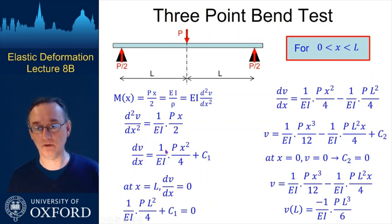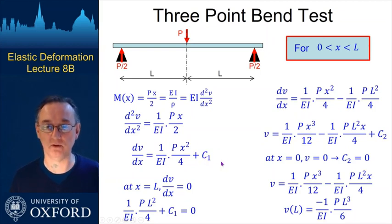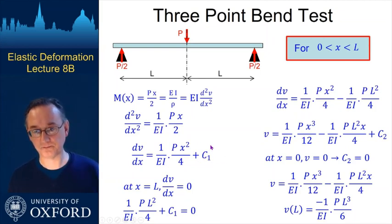And if we do that, this bit's constant here, the only bit that varies with position x is x. So we integrate that, that will go to x squared. We need to divide by 2 again so that 2 has jumped to a 4 here. And of course we have to add on a constant of integration. Now to tidy up that constant of integration we can go to different points along the beam here and think about what the boundary conditions are, what we actually know about the beam.